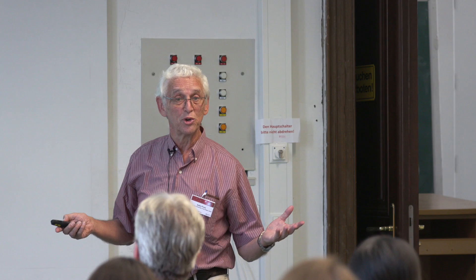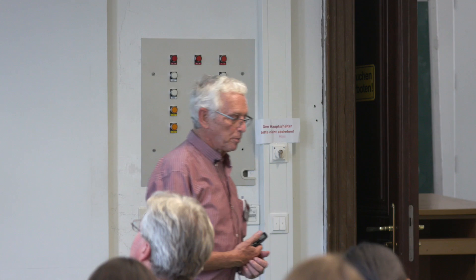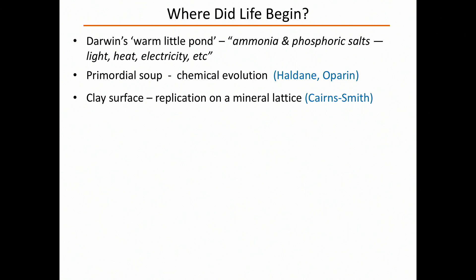In the 1960s, a quite wild proposal was put forward by a chemist called Graham Cairns-Smith. He proposed that life began on clay surfaces, and actually began with replication on a mineral lattice — it wasn't organic at all. At some point, that replication process was taken over by organics. That was highly speculative. What you learn once you deal with the origin of life problem is you have to think out of the box. We don't really believe it today, but it was a different way of thinking about the problem.